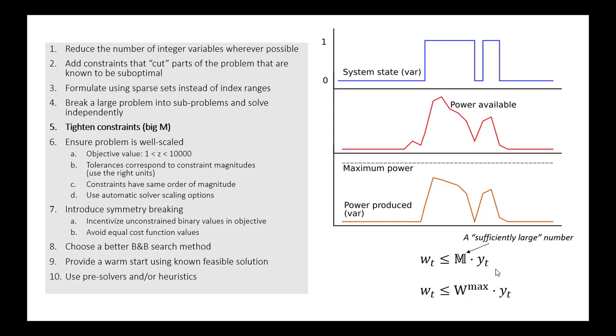So a bad way of formulating this problem is to say that w sub t is less than or equal to this big M times the binary. And we just make this big M a really large number, and then separately we'd introduce some constraint related to the power available. So this binary is dictating the operational state of the system. But the mismatch between the coefficients, let's say we chose 1 times 10 to the 10th for our big M. That certainly will make it so that the constraint can be satisfied when y sub t is 1. However, it causes the problem again to be very unsolvable or very unstable from the solver's perspective.